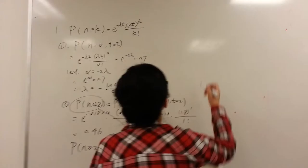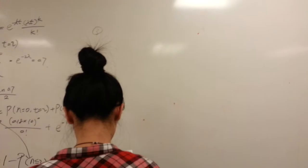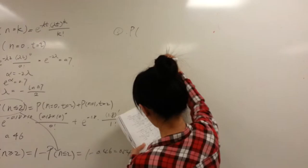The third one is the probability that exactly one customer will arrive in one minute.